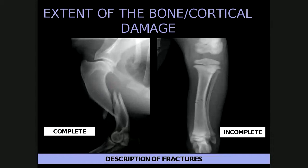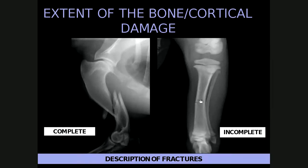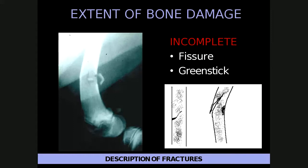The extent of cortical damage is described as either complete or incomplete. A complete fracture extends through both cortices, whereas an incomplete fracture involves only a single cortex or a small portion of the bone. Incomplete fractures can be classified as fissure or stress fractures, resulting from microfractures caused by repeated trauma over time that exceeds the loading capacity of bone — for example in racehorses or racing greyhounds. A greenstick fracture normally occurs in young animals and is an incomplete fracture on one side of the bone with bending of the opposite cortex.